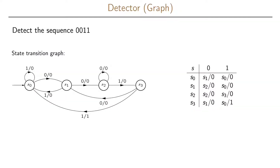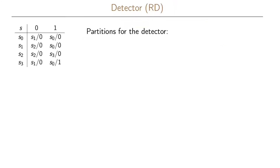We are again going to look at our detector example to see how this reduced dependency algorithm works. This example is a detector that detects the sequence 0011 and when the sequence is detected it will output a 1. Here we have the corresponding state transition table and this is what we're going to use in our algorithm, because this table uniquely shows us how we go to the next state when we are in the current state.